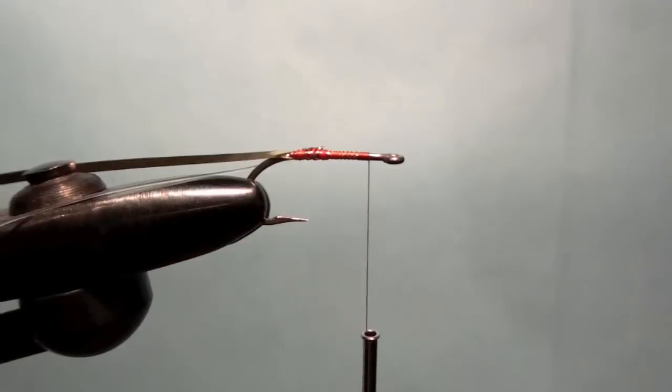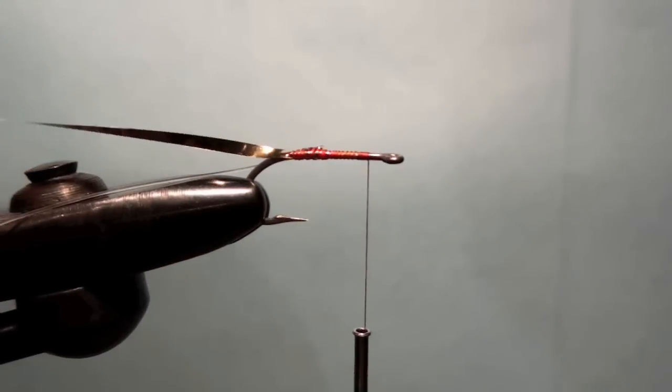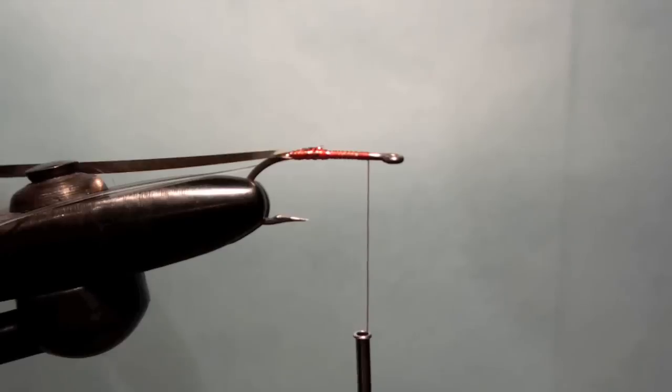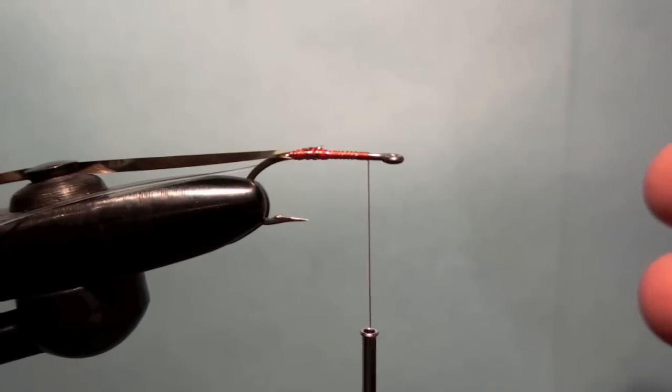This tinsel is gold on one side silver on the other so when I tie it in I always tie it in with the gold facing you so we'll get the silver facing on the outside. And I use red tying thread, a lot of people use black tying thread, I just prefer the red. I don't know why, maybe I think it shows up better in the water.